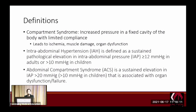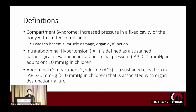Intra-abdominal hypertension is defined as a sustained pathologic elevation in intra-abdominal pressure, which is greater than 12 mmHg for adults and 10 for children. Abdominal compartment syndrome is when intra-abdominal hypertension causes organ dysfunction, and this usually happens with intra-abdominal pressures greater than 20 mmHg.